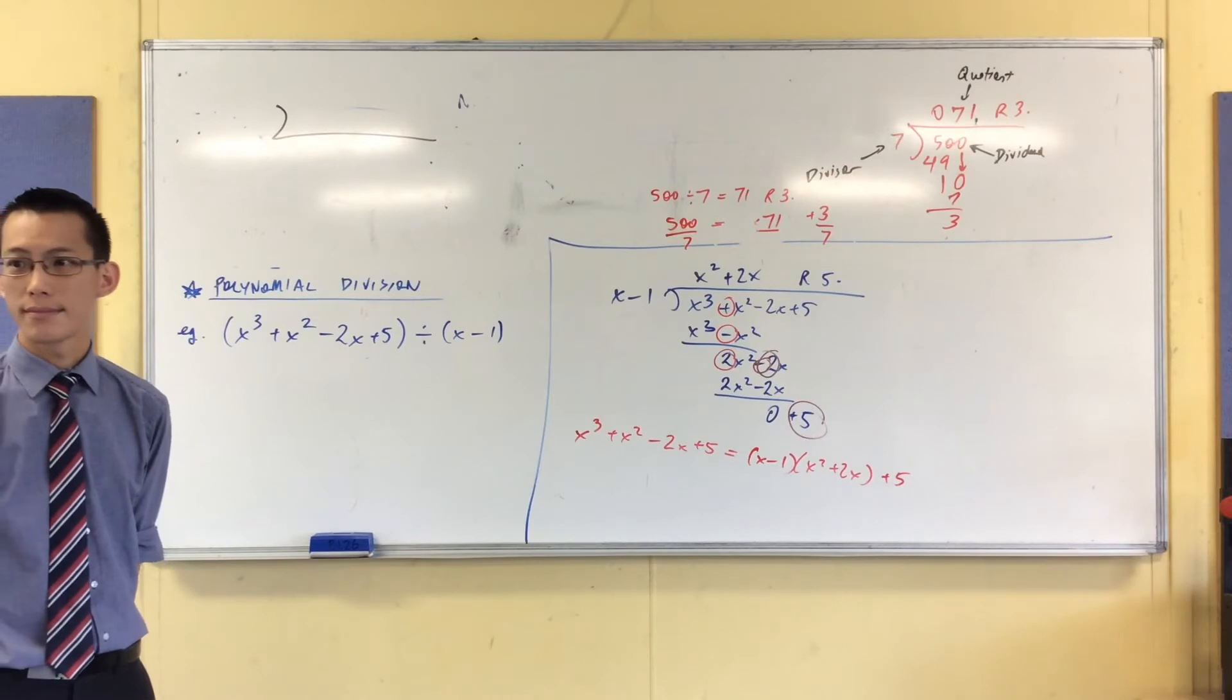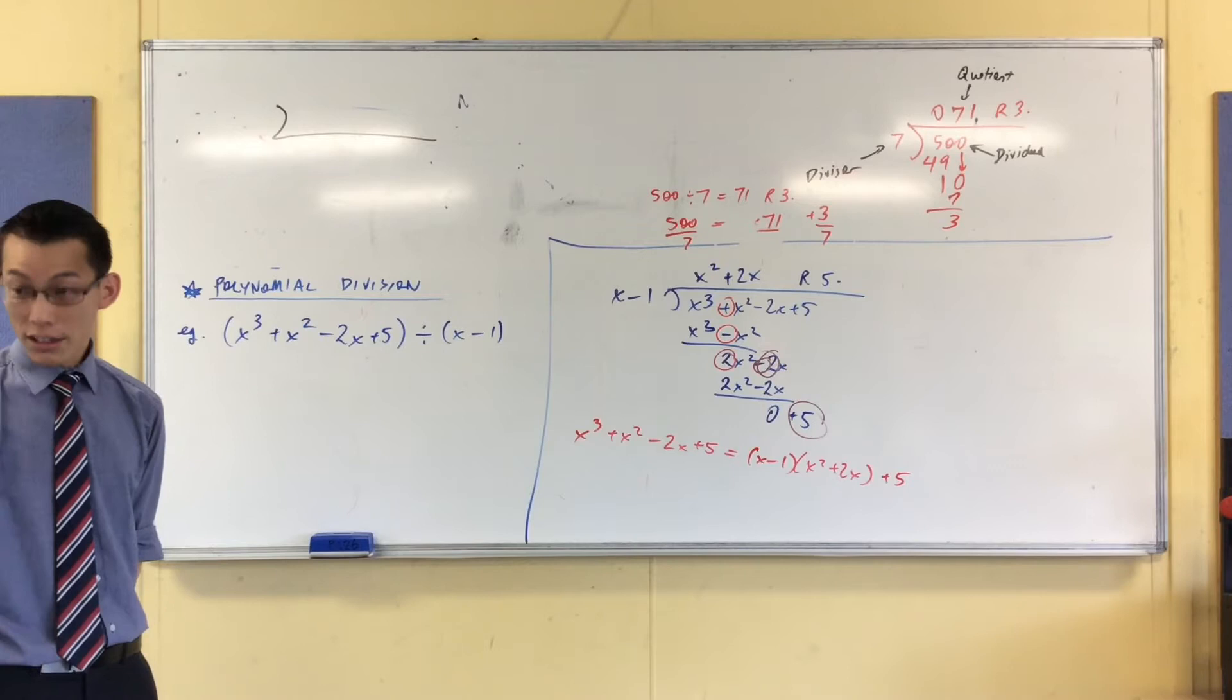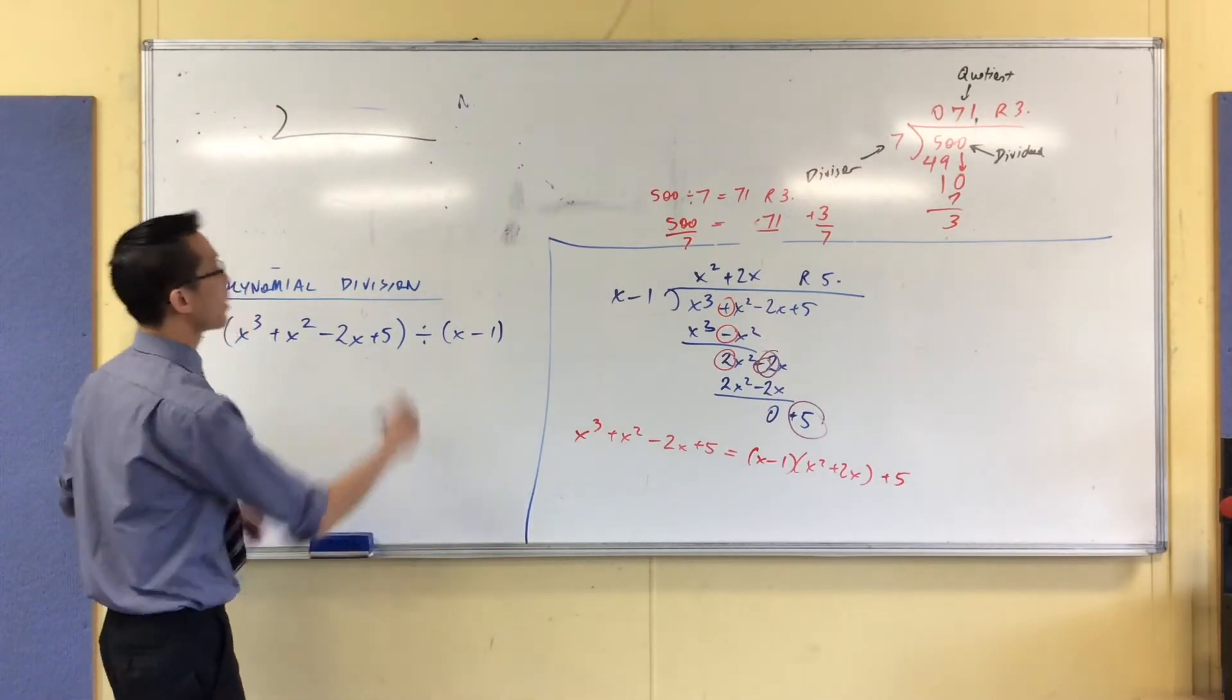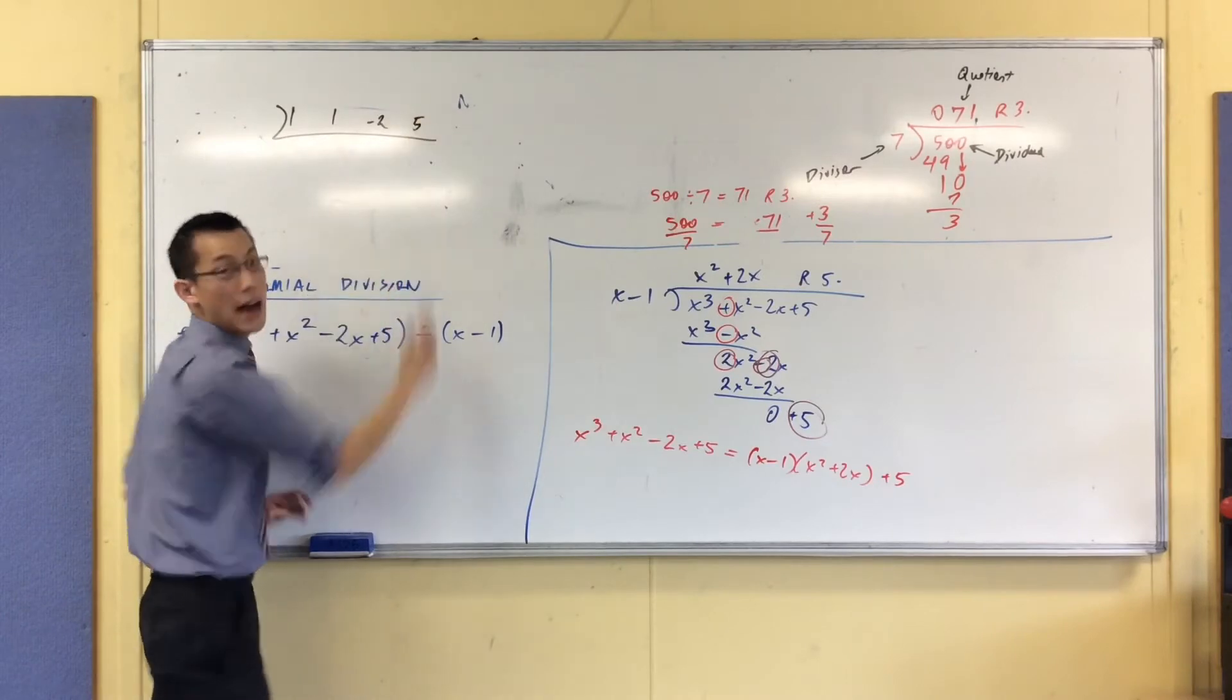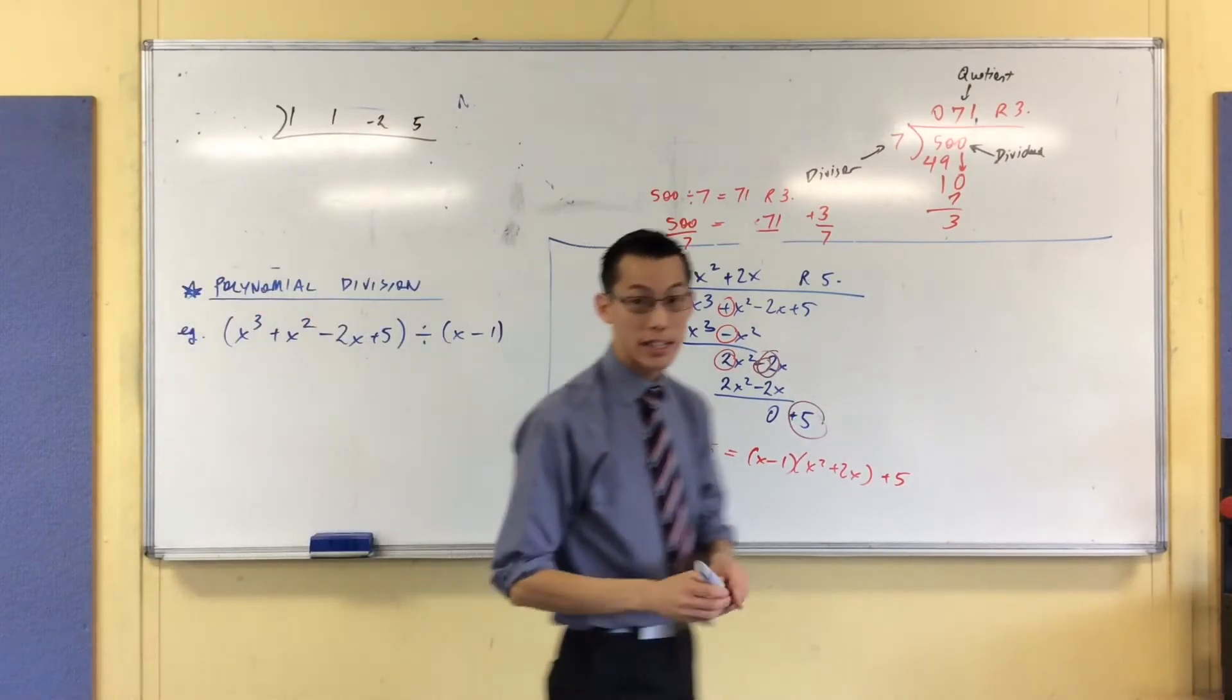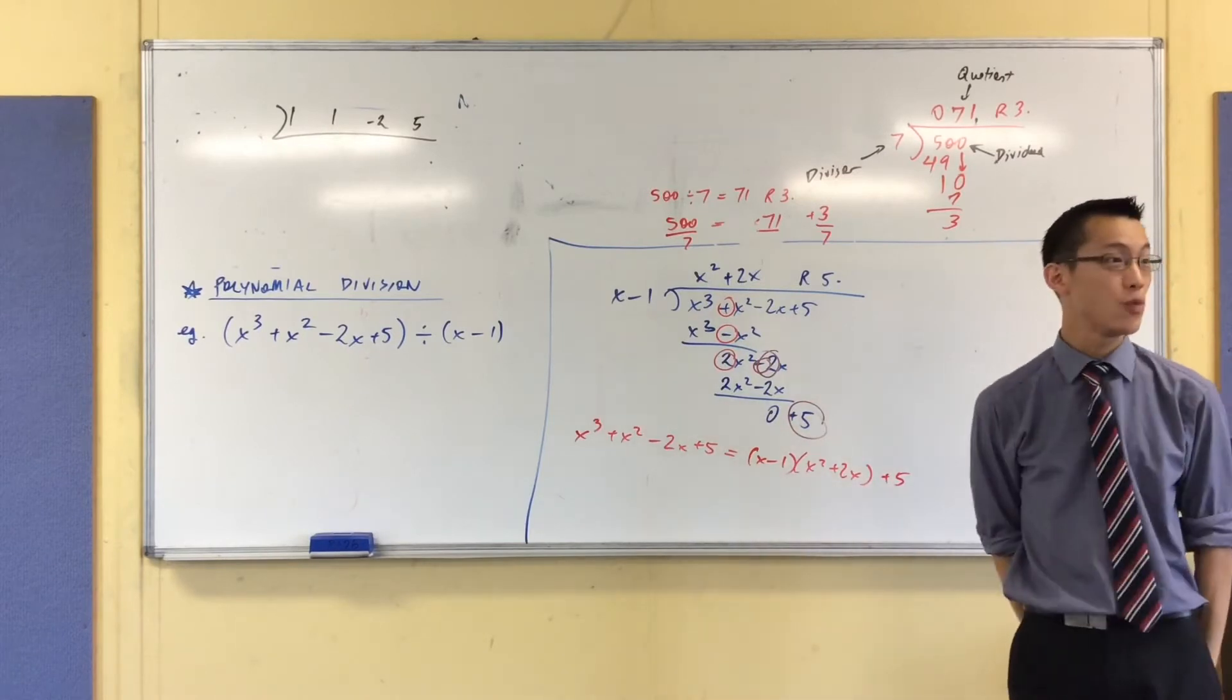How do you know that the number you're dividing by is always going to be to the power of, like, 1? I'll get to that. So what I've got here is 1, 1, negative 2, 5, okay? Now, I will explain that when I explain why this method is not in the syllabus and why I'm going to teach you anywhere, okay?